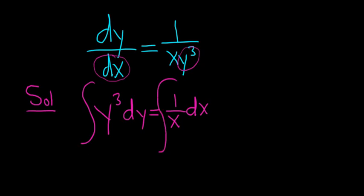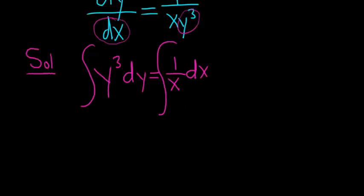To integrate the left-hand side, we can just use the power rule. We can add one to the exponent. There's a 3 here, so we add one. So we get y to the 4, and we divide by that number.